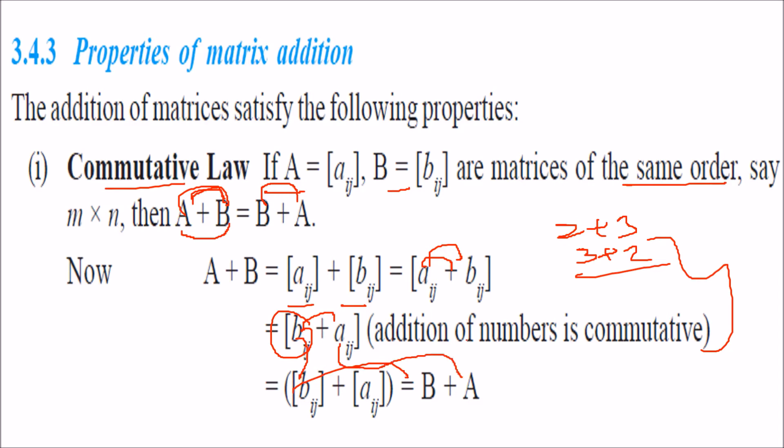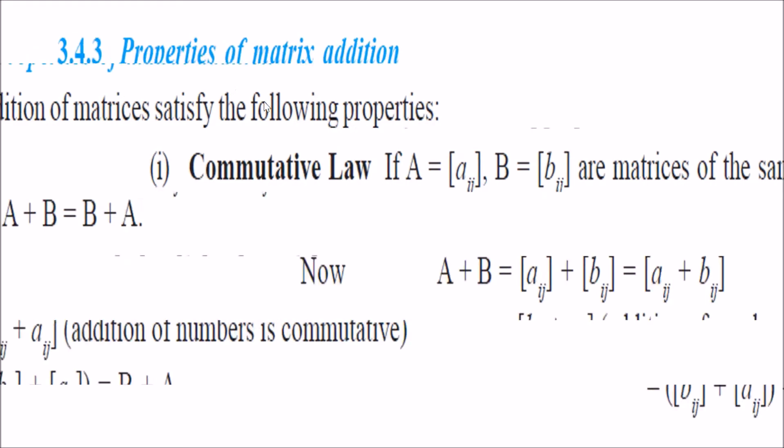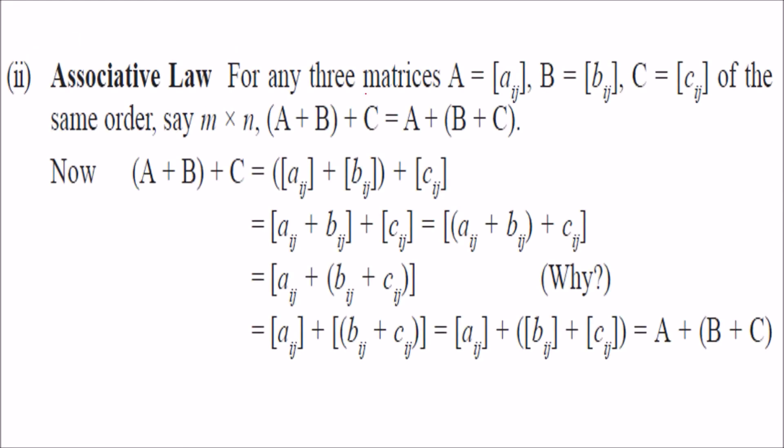Associative law: what does associative law say? This means if A is added with B and then the result is added with C, it is equivalent to A added with the result of B plus C.